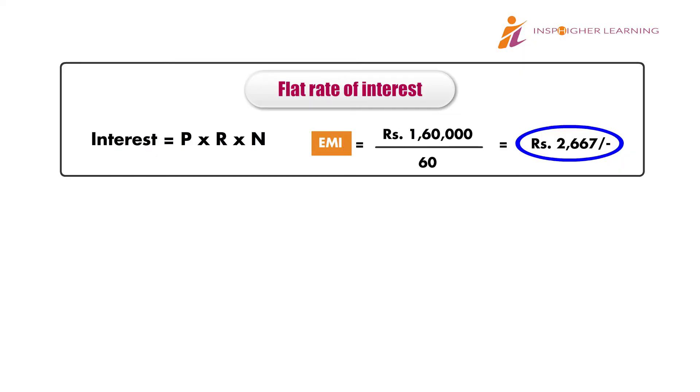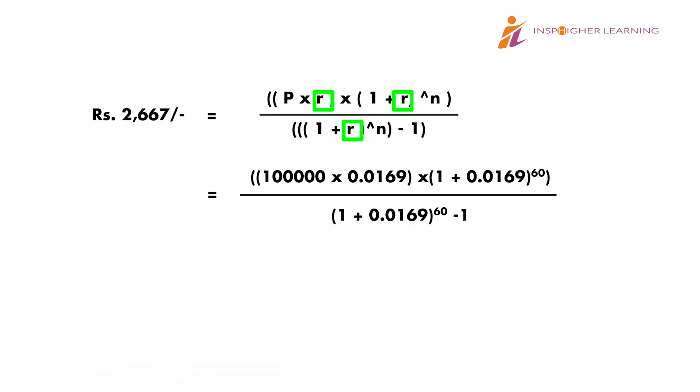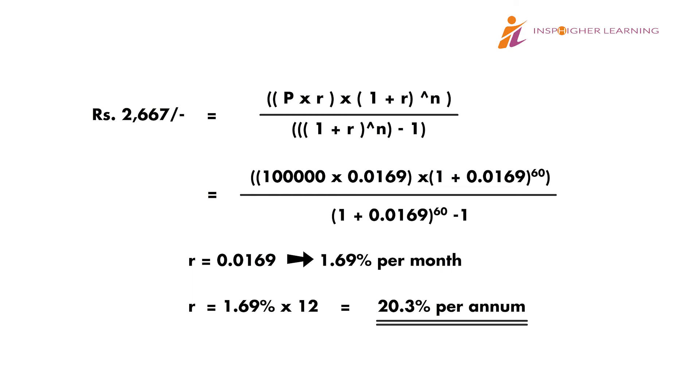We know our EMI calculated using the flat rate method, and we know the formula for finding EMI under the reducing interest method. A logical solution is to equate the two and find at what reducing rate of interest we get this EMI value. Using a trial-and-error method, we increase or decrease an assumed rate until we arrive at the desired EMI figure. In this example, we get this EMI when small r equals 0.0169, meaning the monthly reducing interest is 1.69%, which translates to 20.3% per annum. In other words, for a loan of 1 lakh rupees for 5 years, a 12% flat rate is equivalent to a 20.3% reducing rate.